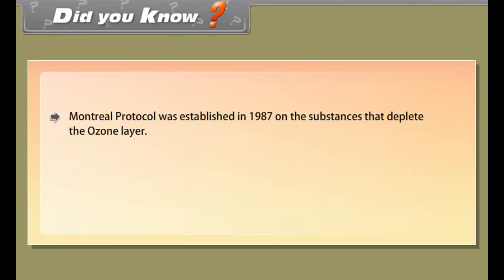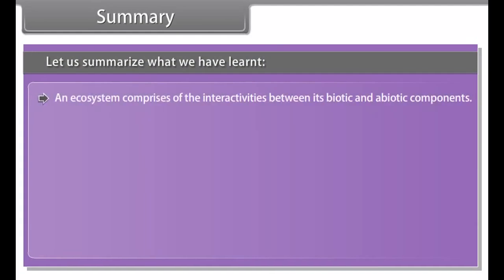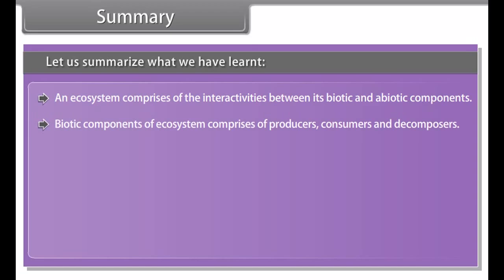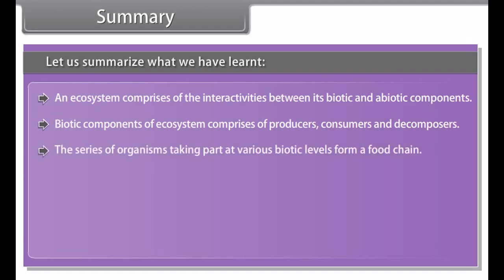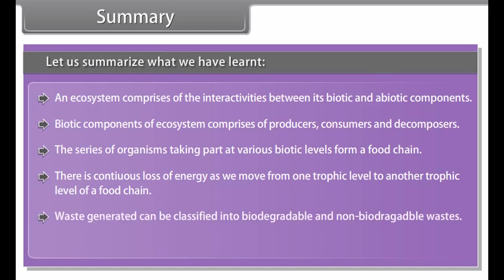Ozone molecule contains three oxygen atoms — O3. At higher levels in the atmosphere, UV radiation splits some oxygen molecules (O2) into free oxygen atoms, which combine with oxygen molecules (O2) to form ozone. The ozone layer present in the higher layer of the atmosphere protects the Earth from harmful UV radiation from the sun. UV radiation causes skin cancer in humans. The ozone layer is being damaged by the use of chemicals like chlorofluorocarbons (CFCs), used in refrigerators and fire extinguishers. So, the use of CFCs is now being reduced to protect the ozone layer.